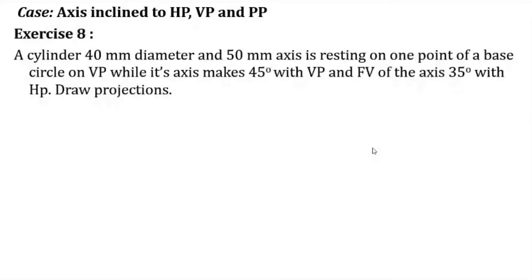The object is a cylinder with a diameter of 40mm and an axis length of 50mm. It is resting on VP — not on HP — with one point of the base circle. Its axis makes an angle of 45 degrees with VP. The second condition is that the front view of the axis makes 35 degrees with HP. Draw the projections.